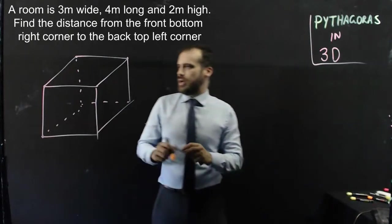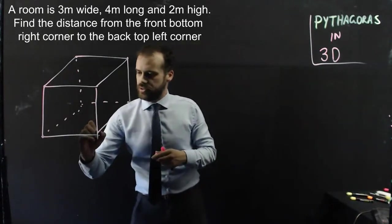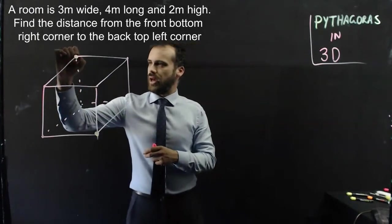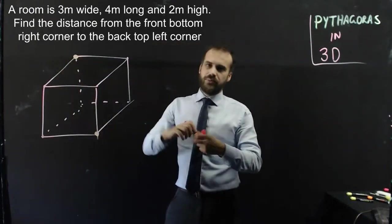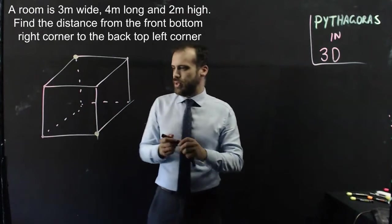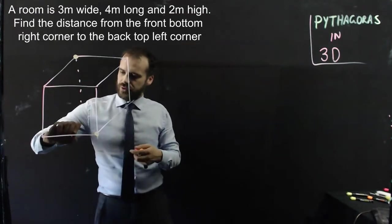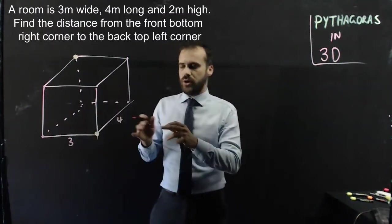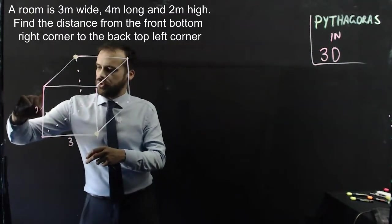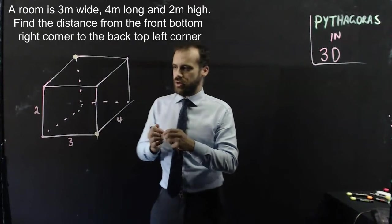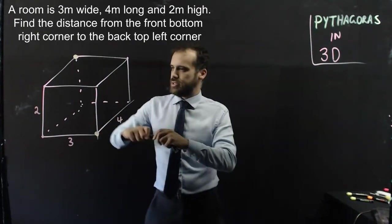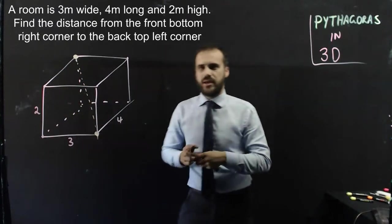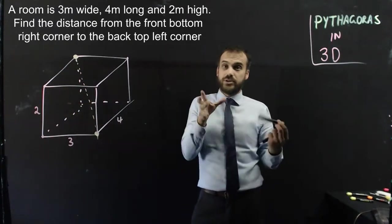We're asking the distance from this point here to that point here, and we've been given some dimensions. We know that it's 3 meters long, 4 meters wide, and 2 meters high — so there's our room.